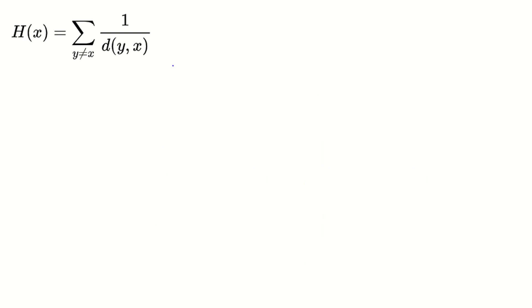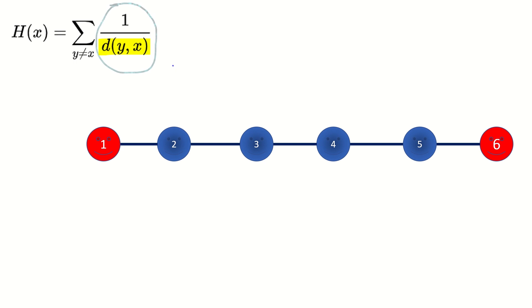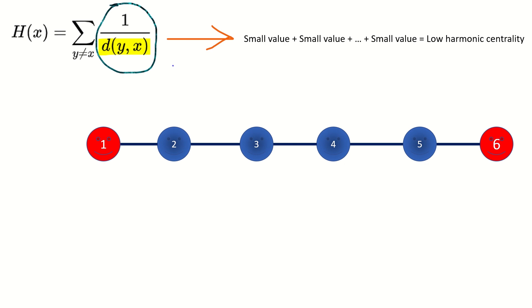So how does this tell us what vertices are important in the network? Remember what harmonic centrality is — a sum of distance reciprocals. When the distance between vertices is high, like vertex 1 and 6 in this graph, the denominator in the distance reciprocal is also high, meaning that the value of the distance reciprocal itself is low. If a vertex is really far from most vertices in its graph, you're going to end up with a sum of many low values, resulting in a low harmonic centrality for that vertex.